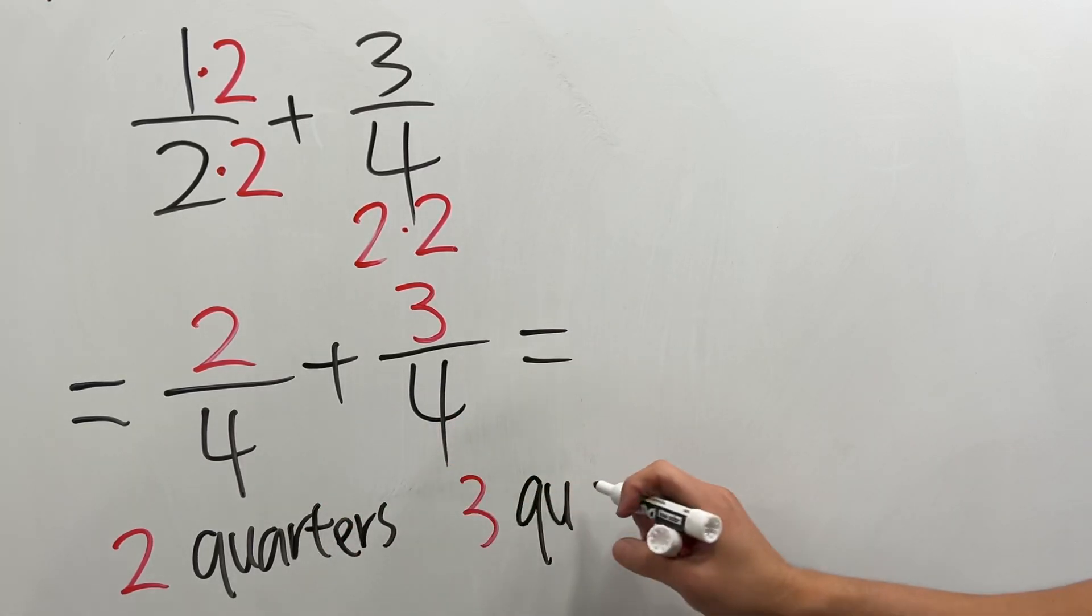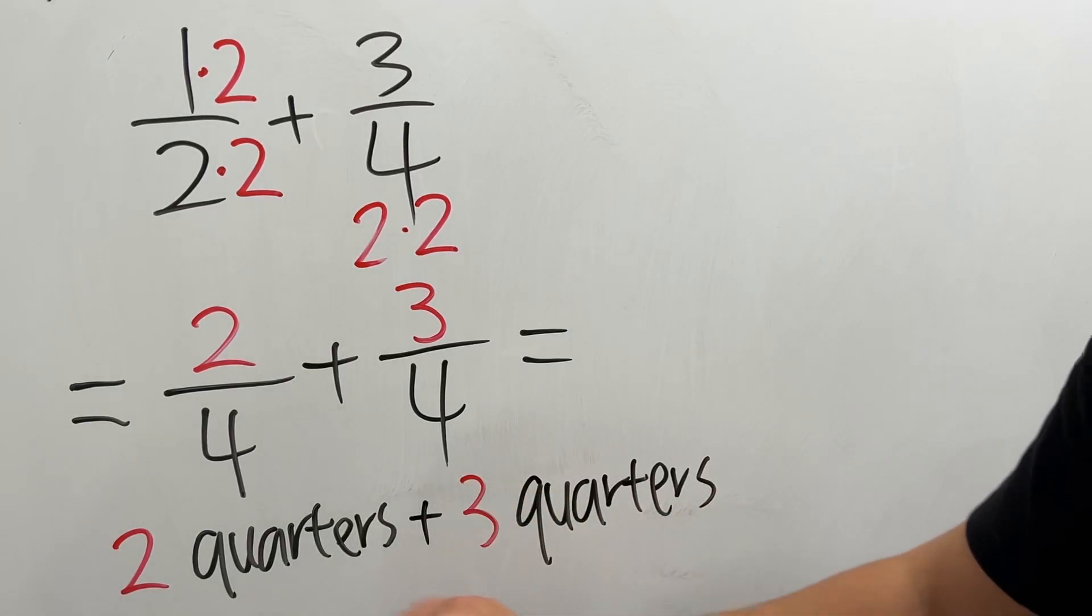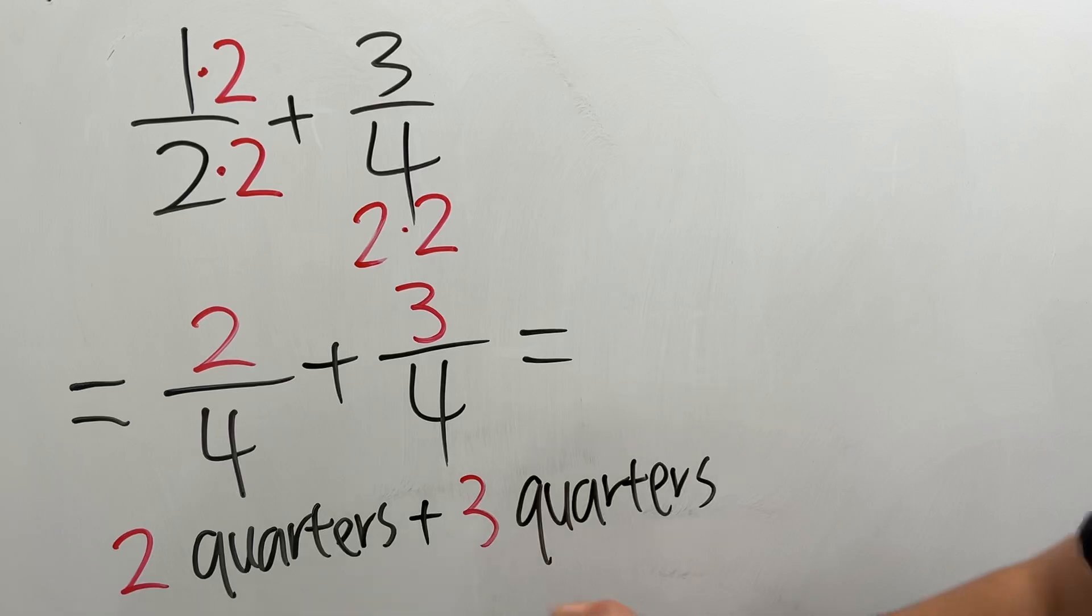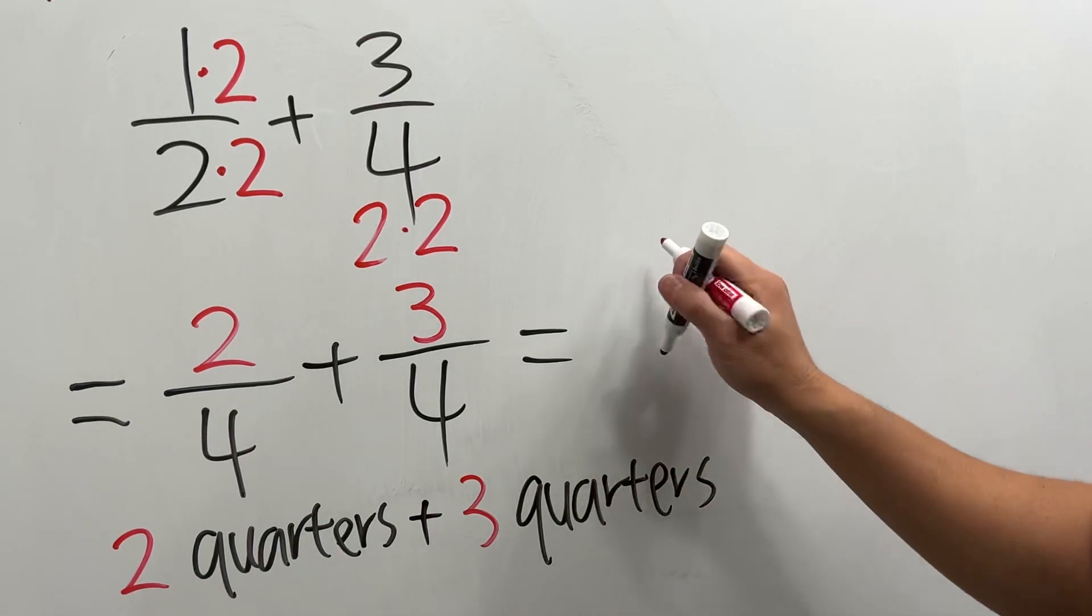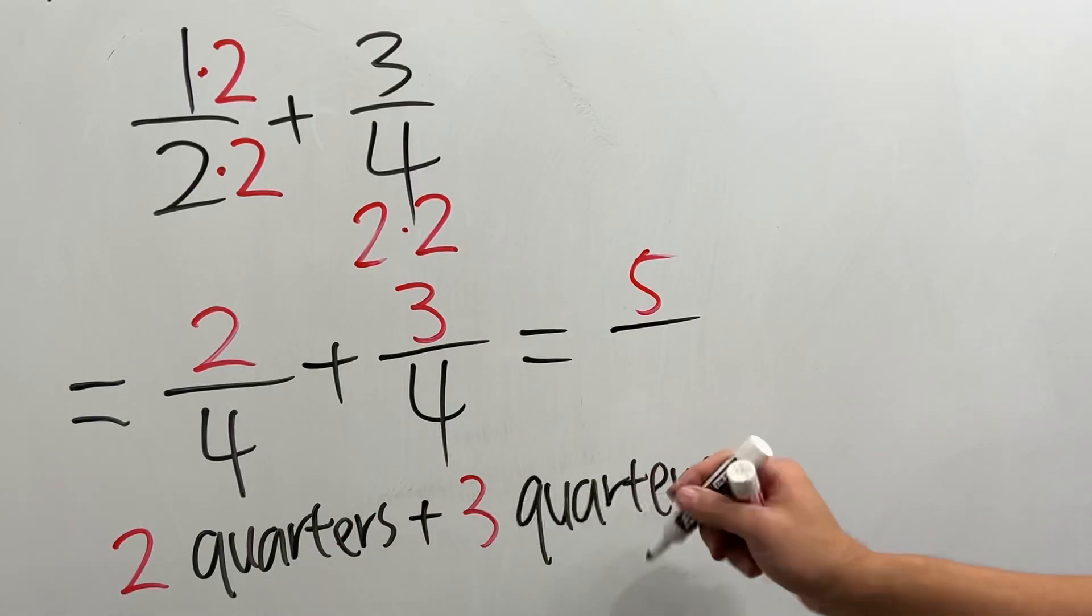So the denominator is kind of like the units. And when you have 2 quarters plus 3 quarters, you have how many quarters? 5 quarters. And the quarters stay the same, so the denominator stays the same.